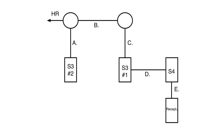So here we have a situation where we have two lights — this light here and this light here. I have three different switching locations: three-way switch number two here, three-way switch number one here, a four-way switch over here, a receptacle down below, and we have what's called the home run over here.